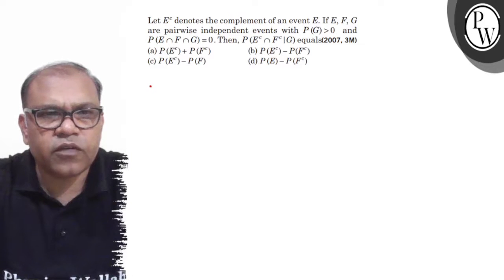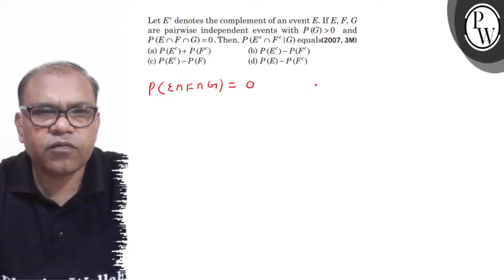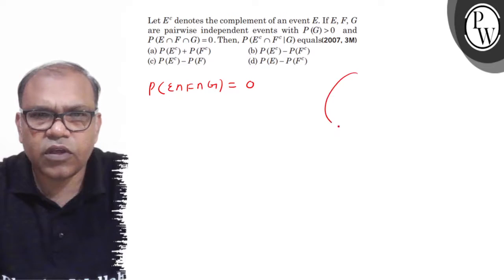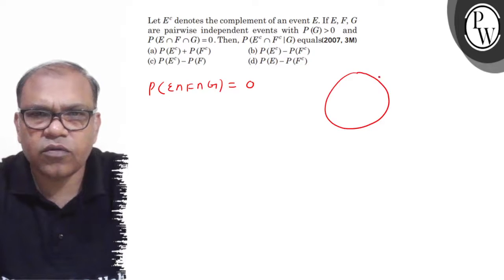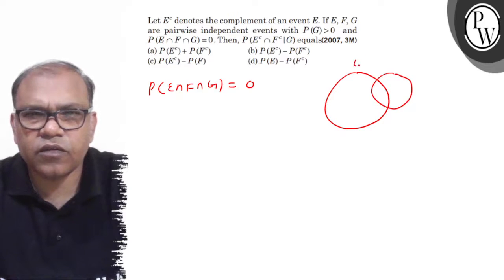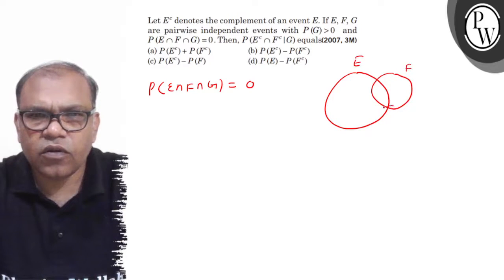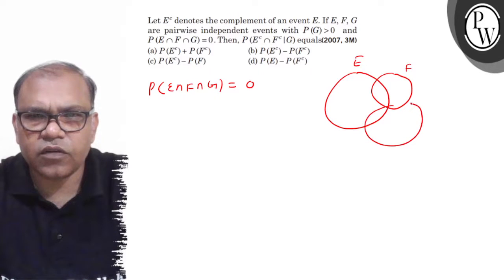So, the first information is that P(E ∩ F ∩ G) equals 0. This means E, F, and G are not common. So, this is E, this is F, and this is G.